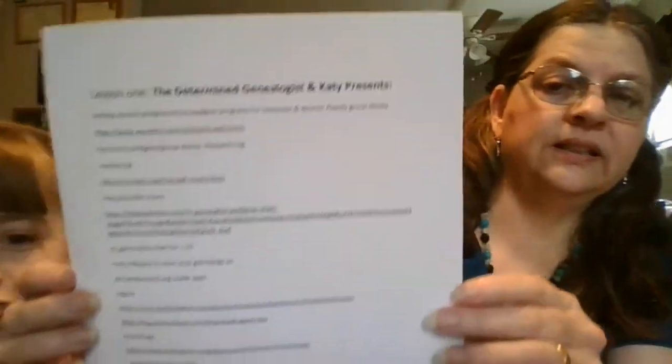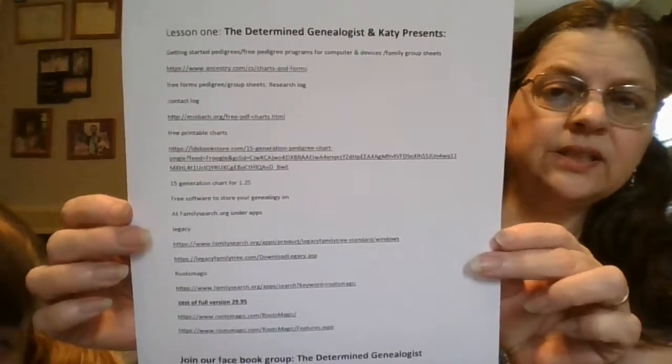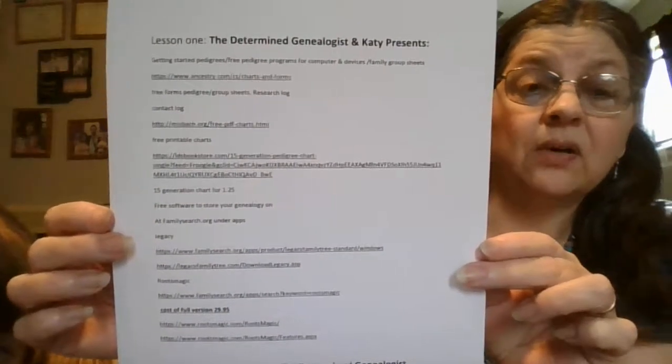Now I'm going to show you this — this is a list of the websites. This will be under a file, under Lesson 1, on my Facebook page, The Determined Genealogists. I put Katie's name on it too because she's a part of this. I couldn't download it to a page so I had to create a group to attach files. I'm also going to add some websites so you can see where you can get these documents free.